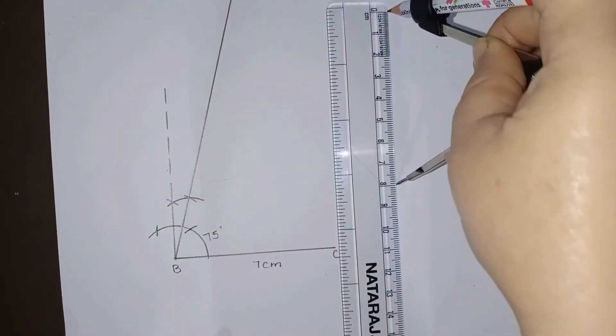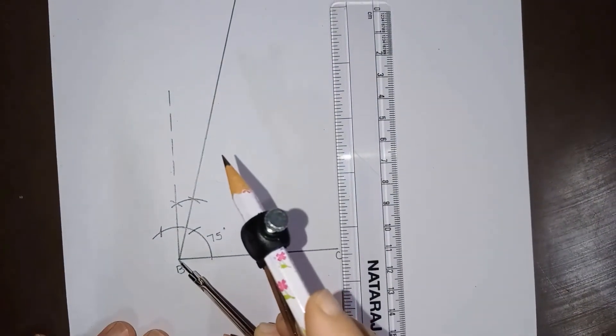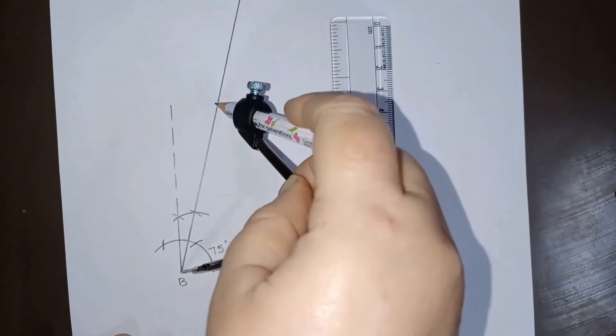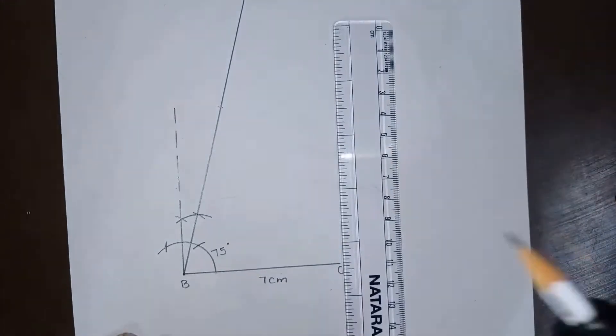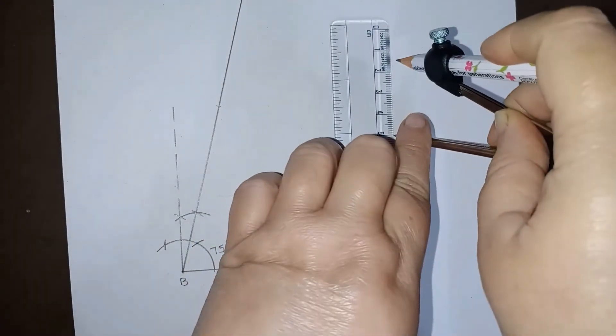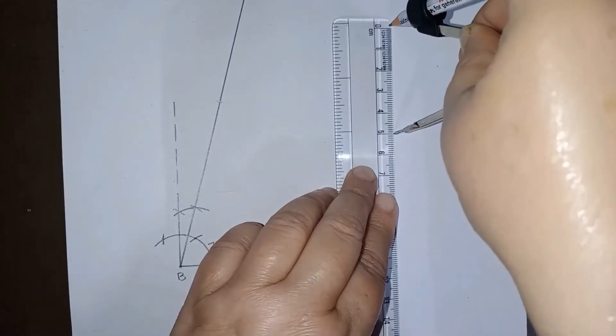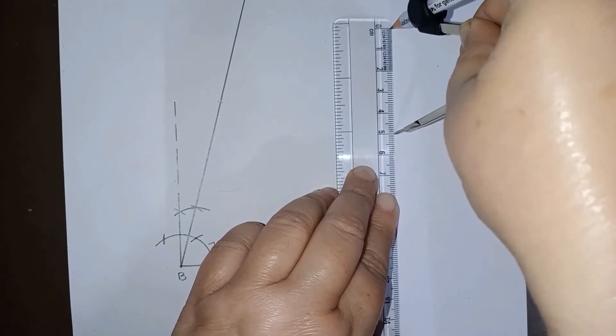So this is, you can see, this is 8 cm. So I can keep it here at B. So this is 8 cm, and 8 plus 5 is 13, then I can take 5 cm. I am doing like this because it is not possible for this compass to open 13 cm.